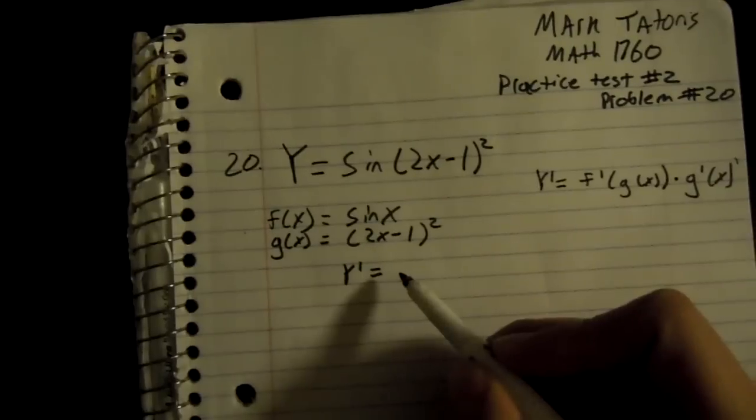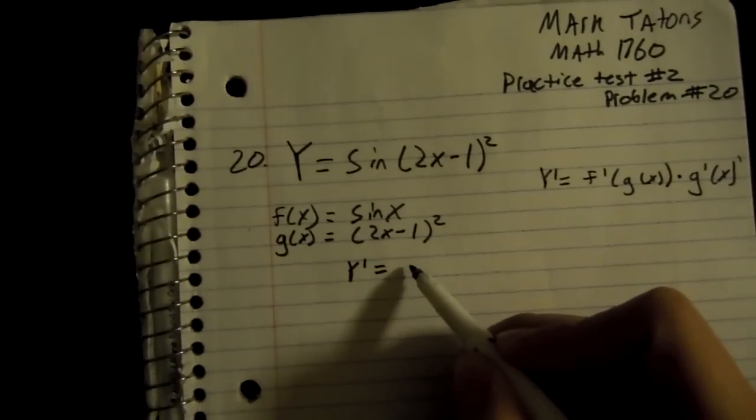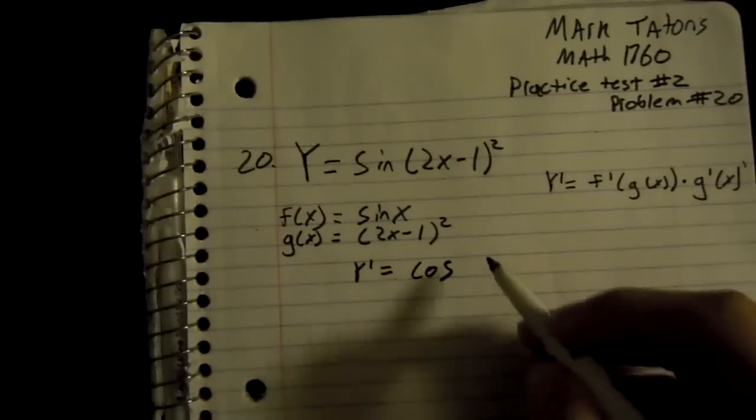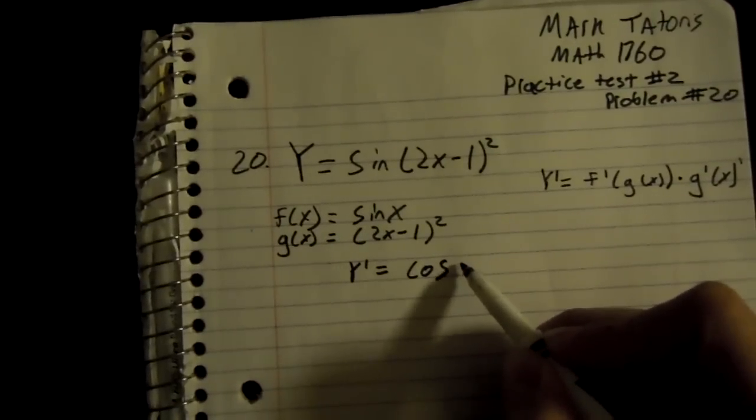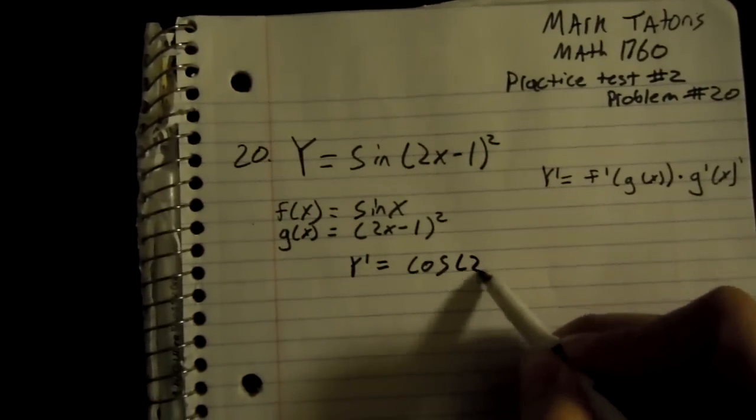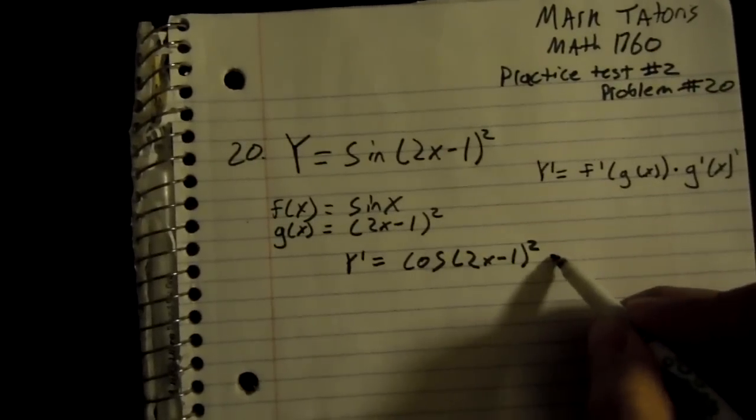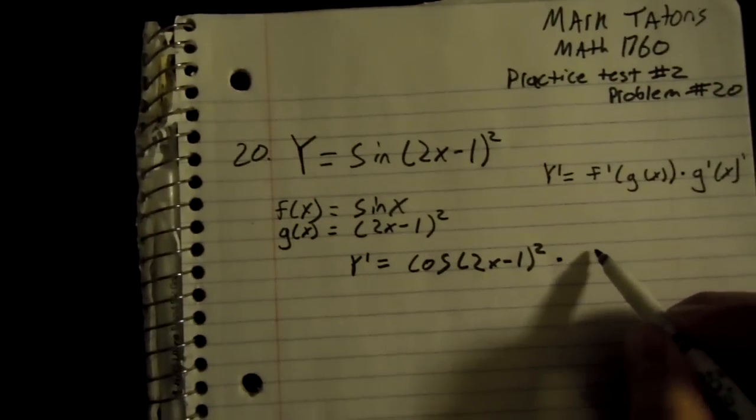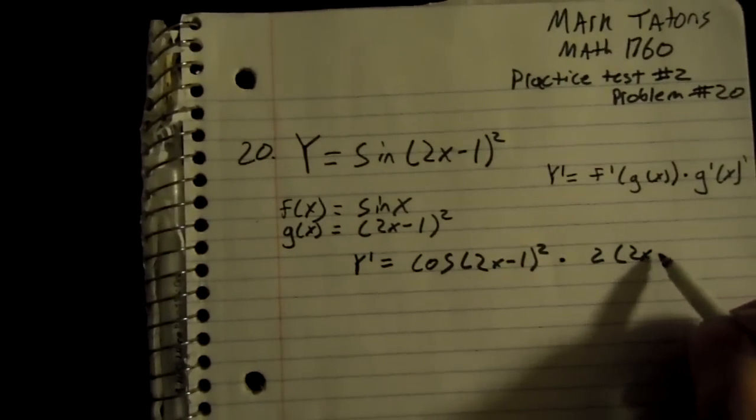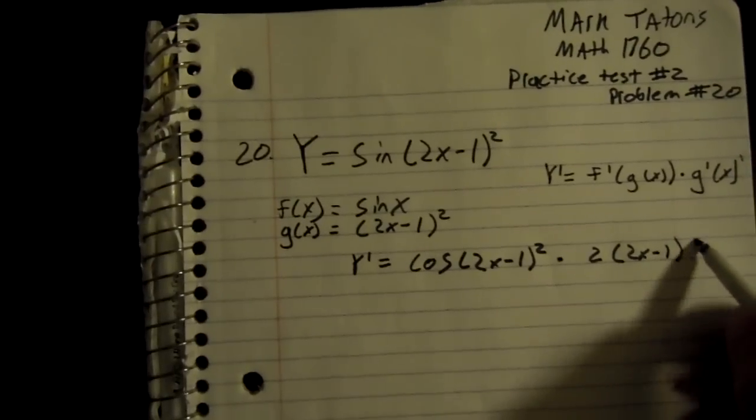So, the derivative of f is cosine times g of x, which is 2x minus 1 squared, times the derivative of g, which is 2 times 2x minus 1.